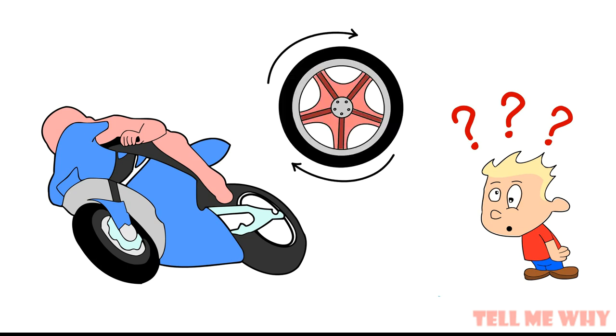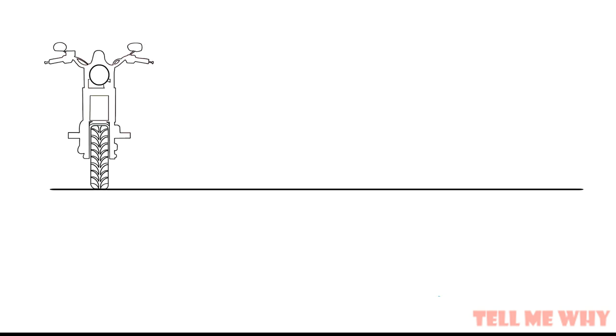It's the rotating tire that keeps the bike from falling down. In mechanics, this principle is called a gyroscope.